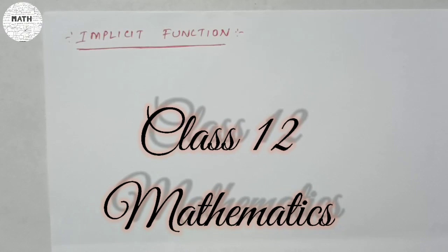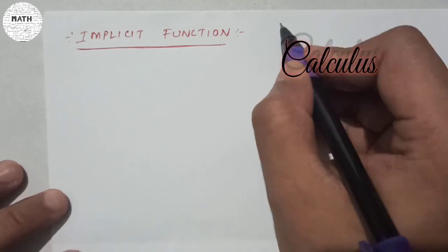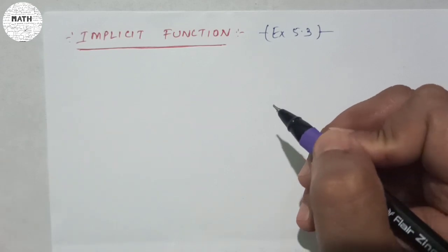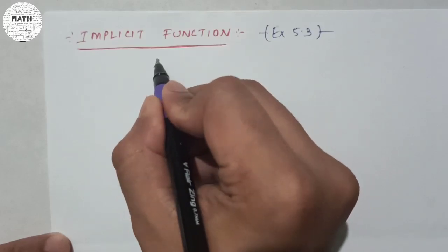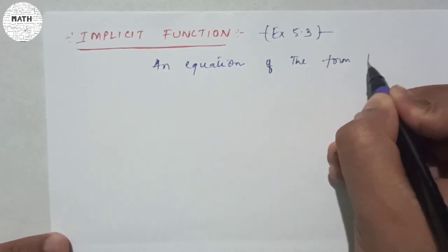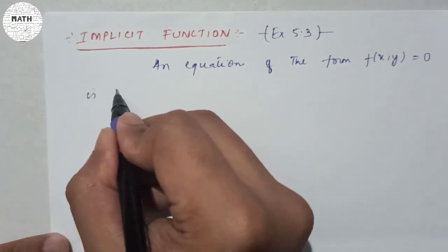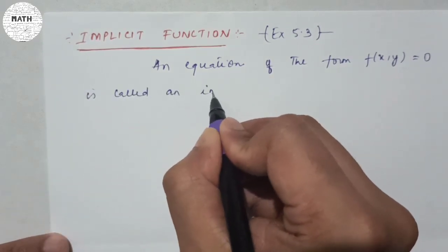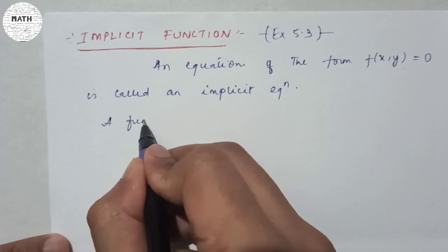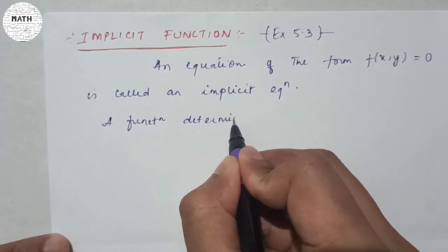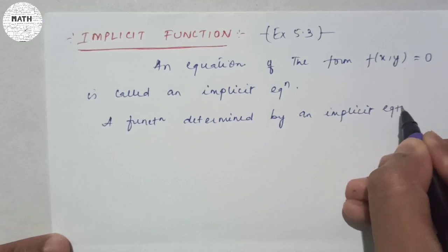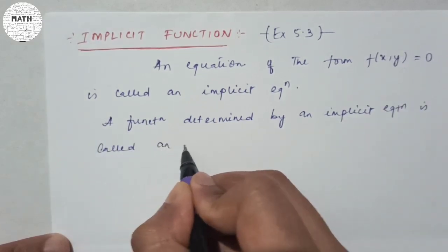Hello guys. In today's video we shall study about implicit functions, which will help us in exercise 5.3 and above. Our main focus is implicit functions. Before we go to implicit functions, we should know what an implicit equation is. It is an equation of the form f(x, y) = 0, called an implicit equation. A function determined by an implicit equation is called an implicit function.